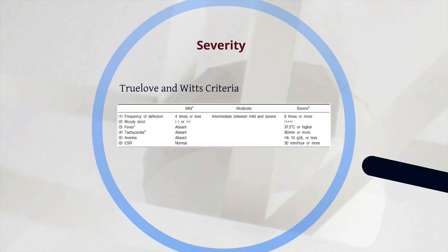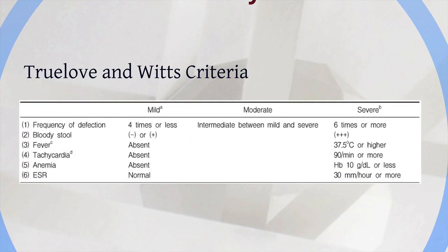In terms of severity, you should know the Truelove and Witts criteria, which allows you to classify ulcerative colitis into mild, moderate, or severe. The six elements of the Truelove and Witts criteria are: frequency of defecation, the presence of blood in the stool, the presence of fever, tachycardia, anaemia, and a raised ESR.